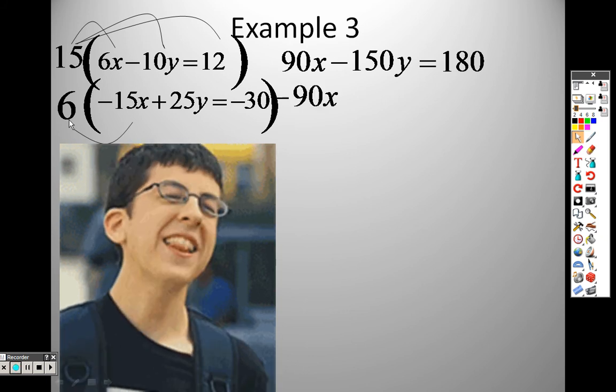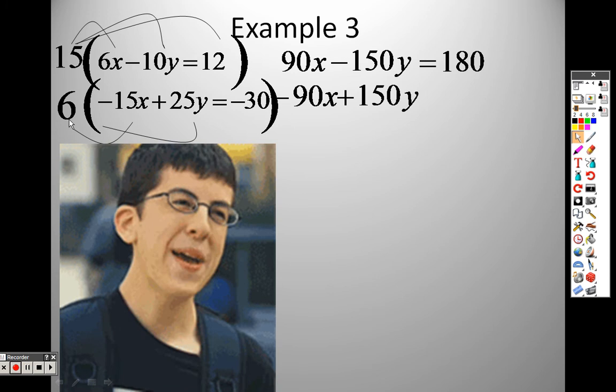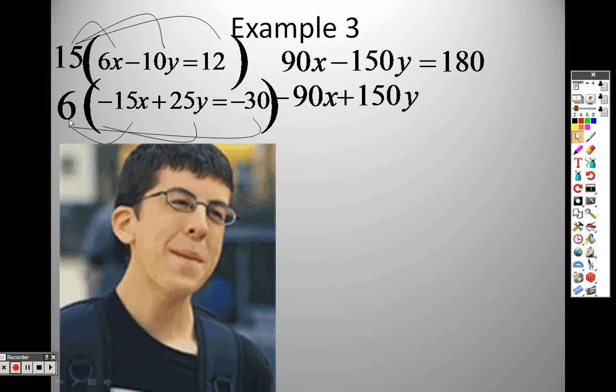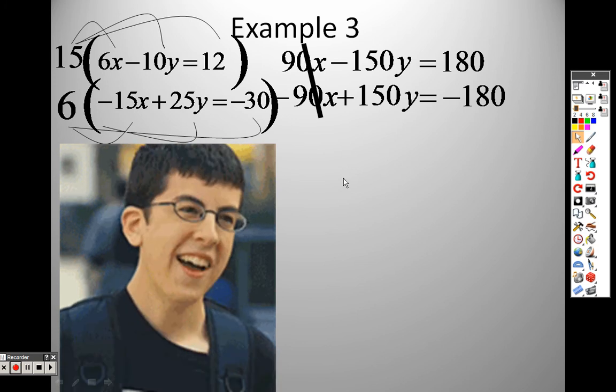On the bottom, 6 times negative 15, negative 90x. 6 times 25, positive 150y. 6 times negative 30, negative 180. That crosses out when I add them. That crosses out when I add them. And that crosses out. Everything crosses out.